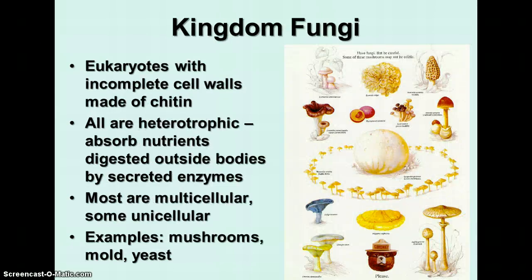Kingdom Fungi is defined as eukaryotes with incomplete cell walls made of chitin. All members of kingdom Fungi are heterotrophs — they absorb nutrients digested outside their bodies by enzymes they secrete. Most of them are multicellular, but there are some unicellular ones. Examples of kingdom Fungi are mushrooms, molds, and yeast.